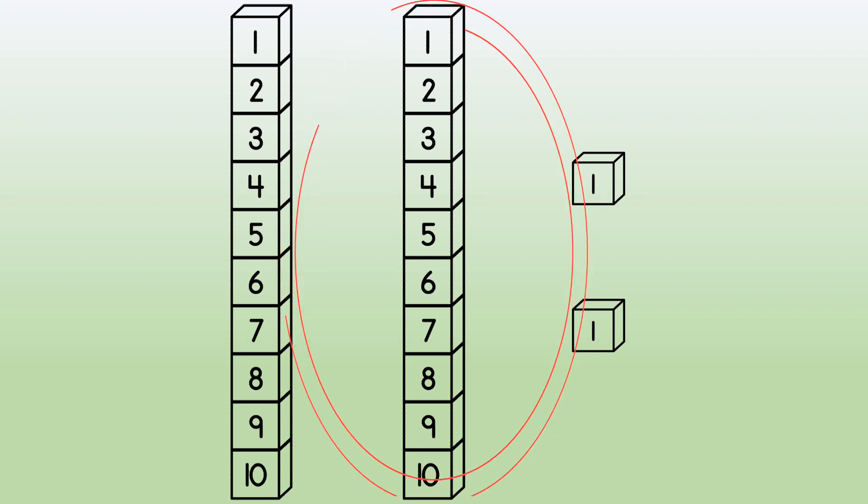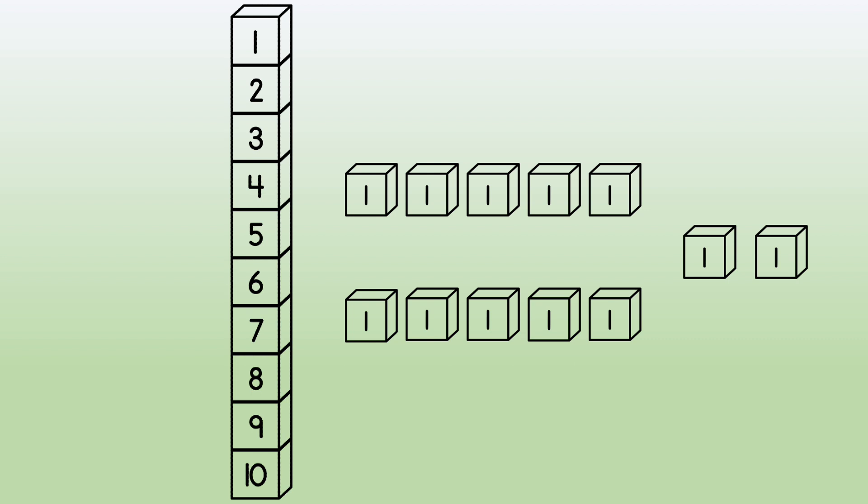In order to take away 5 ones, we'll change 1 of the longs into 10 bits, like this. Now, we have 12 bits, and we can take away 5.